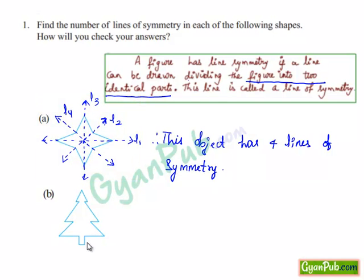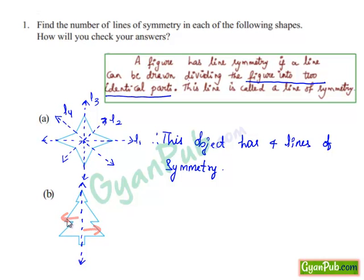Now if we see the second object, it has only one line of symmetry. If we divide this object vertically by a line, the object is shaped identically. Hence it has only one line of symmetry.